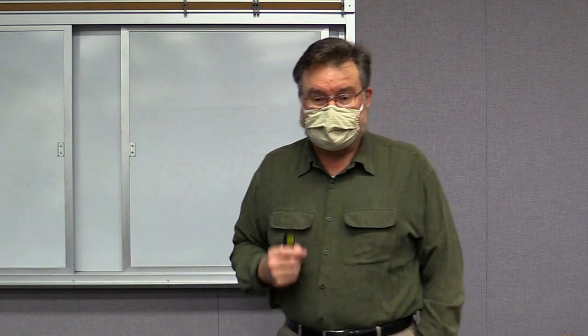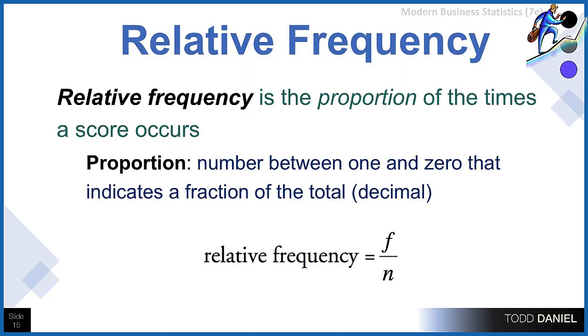Second frequency is relative frequency, which is a proportion of the number of times that a score occurs in your distribution. A proportion is a number between 0 and 1, so it's going to be a decimal. Proportions are always less than 1, greater than 0. And the way that we get a relative frequency is we divide our simple frequency by n, by our total.